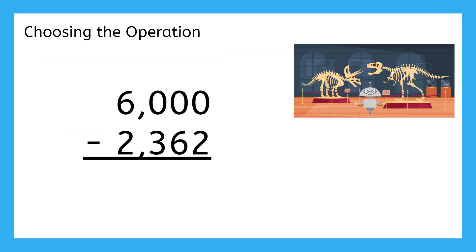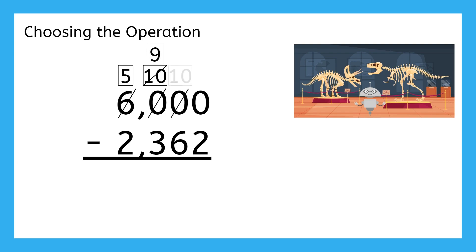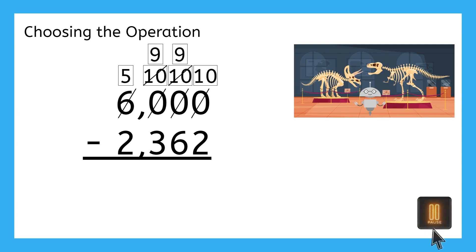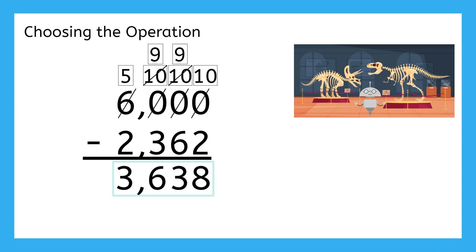6,000 minus 2,362. To solve, we'll need more ones, so let's regroup from the tens — but there aren't any. We can't regroup from the hundreds either. My only option here is to start regrouping from the thousands. Remember, 1,000 can be regrouped as 10 hundreds. Then one of those hundreds can be regrouped as 10 tens. Finally, one of those tens can be regrouped as 10 ones. Pause here to finish solving in your guided notes. Based on our problem solving, the MIA Museum has 3,638 items left in the Dinosaur Exhibit.